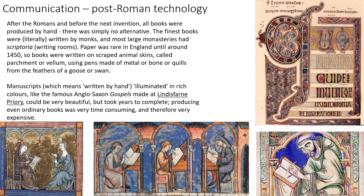We're moving into communication — this is going to be a sort of transport and communication section. This is a brief introduction: after the Romans leave and before our next invention turns up, there is only one way to create books and written word, and that is literally by writing everything out by hand. The people who can best do this are noblemen, and the people with most time are monks. So monasteries were where any written word was created, in illuminated manuscripts like you see in the top right corner. That's what we're working with for hundreds of years — handwritten manuscripts.